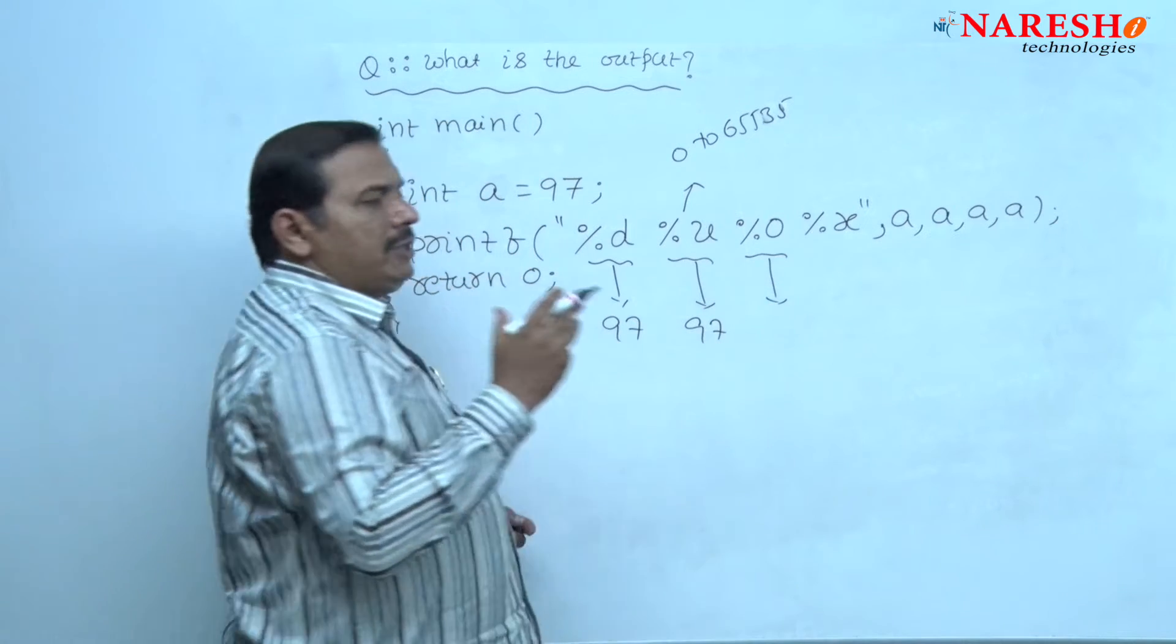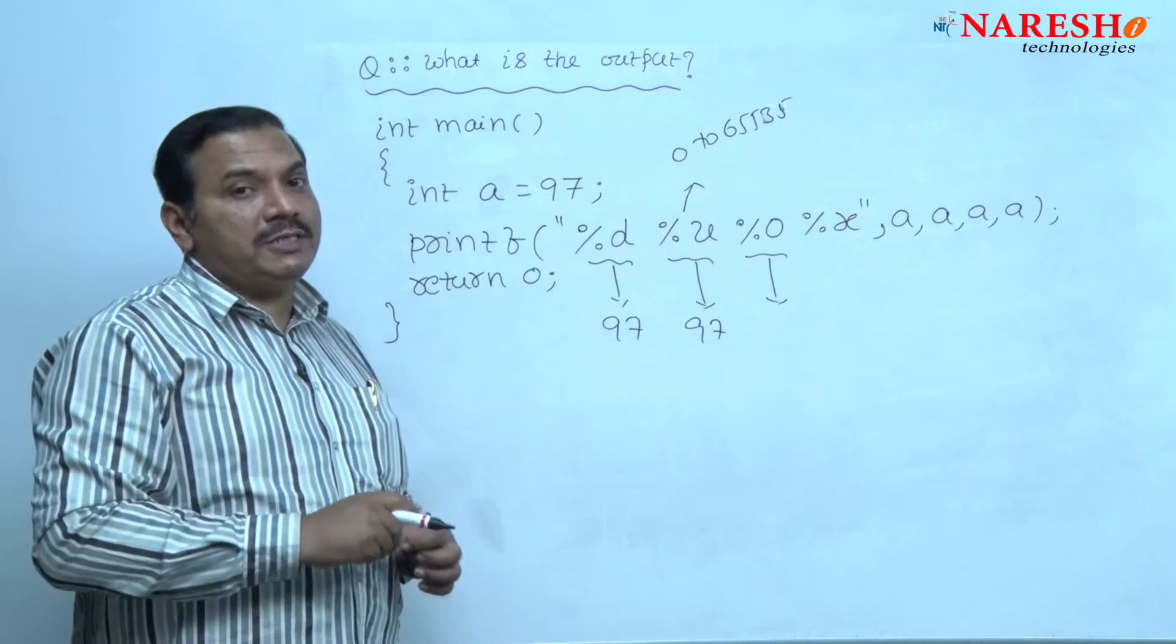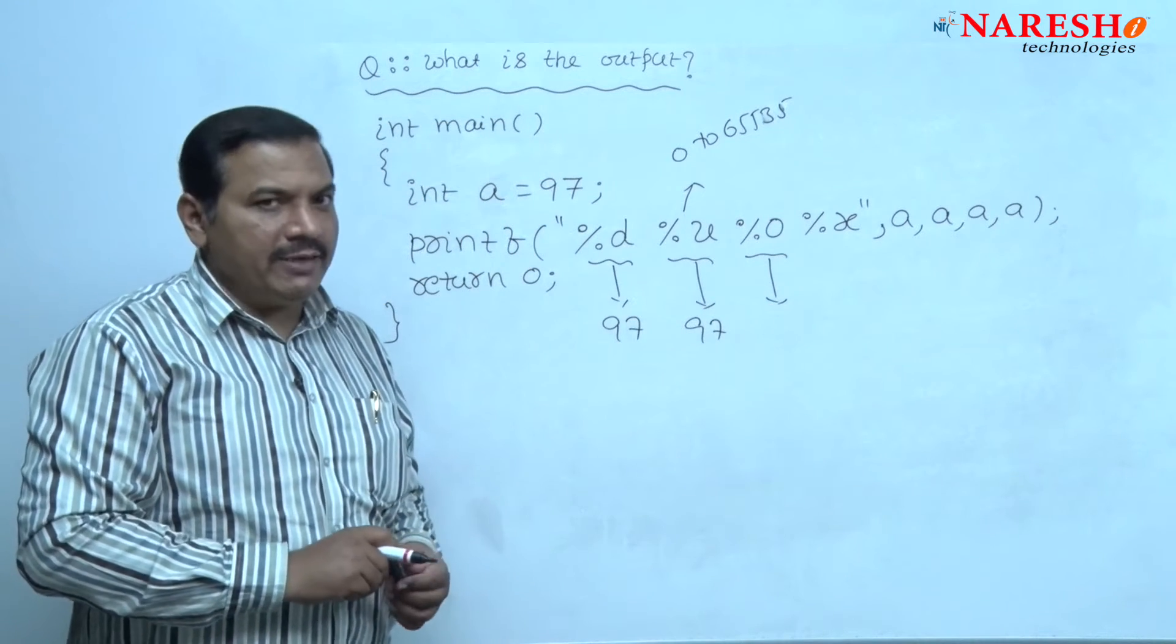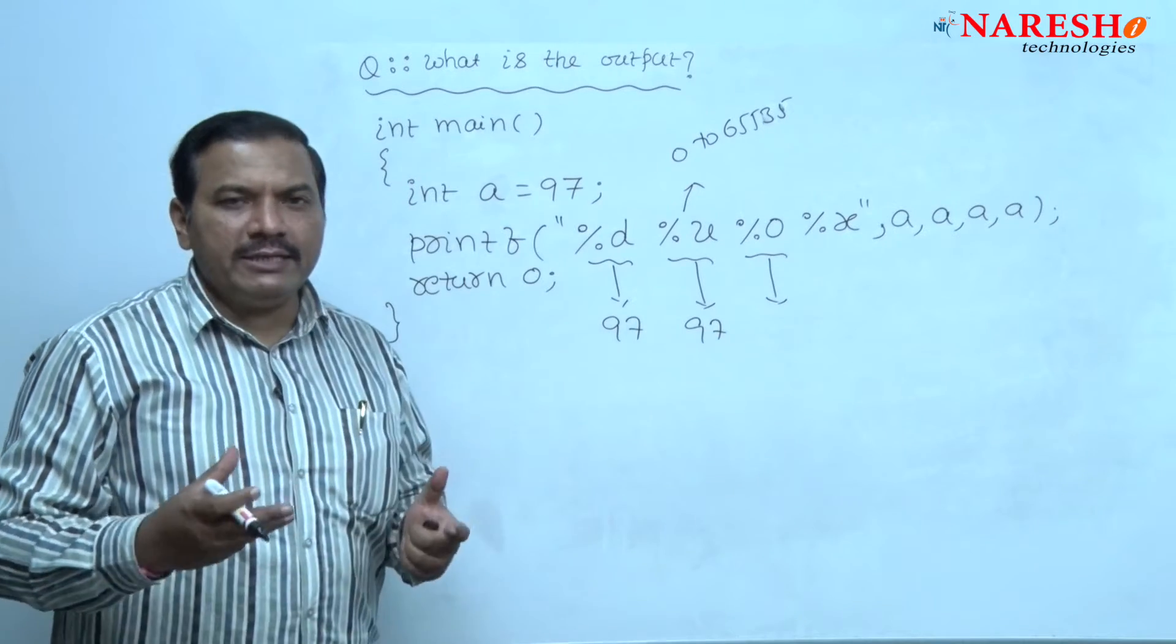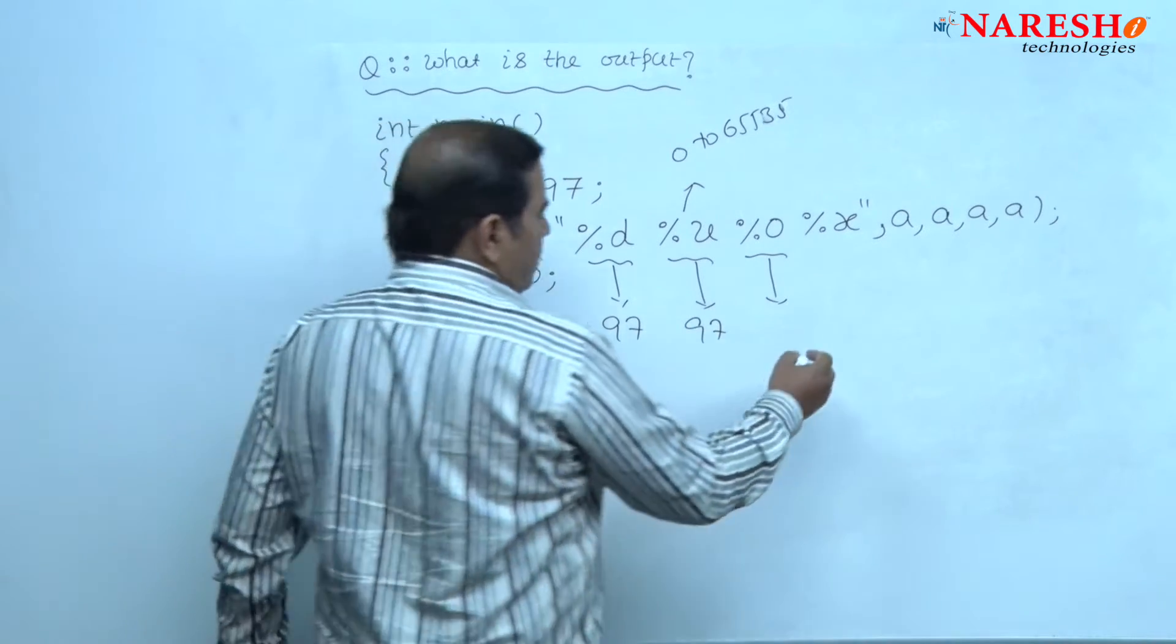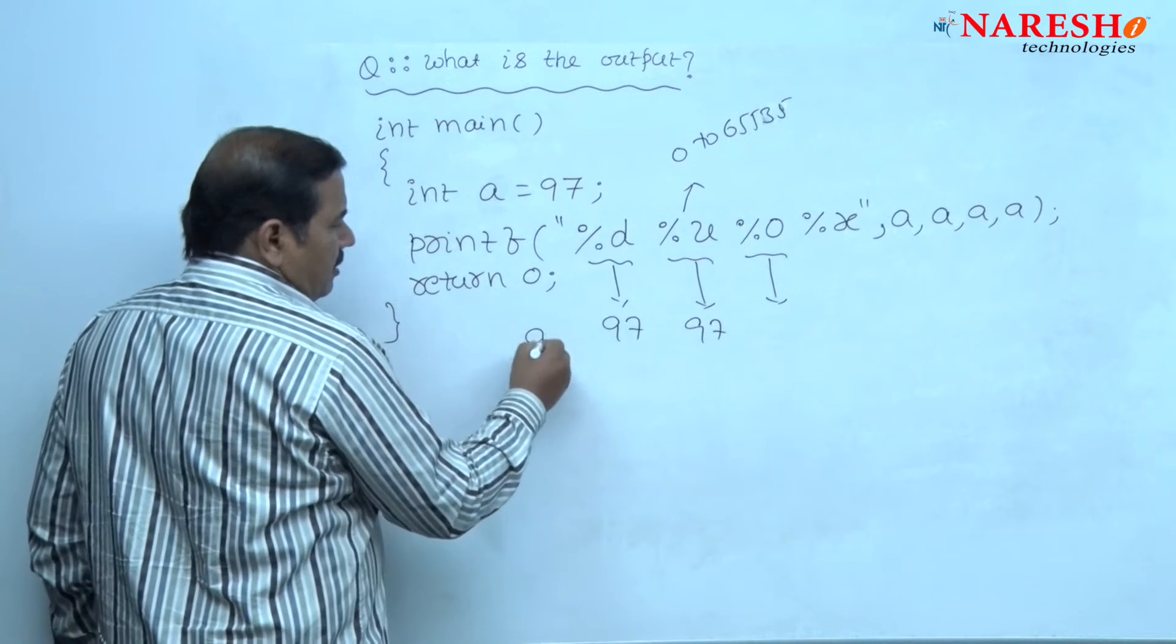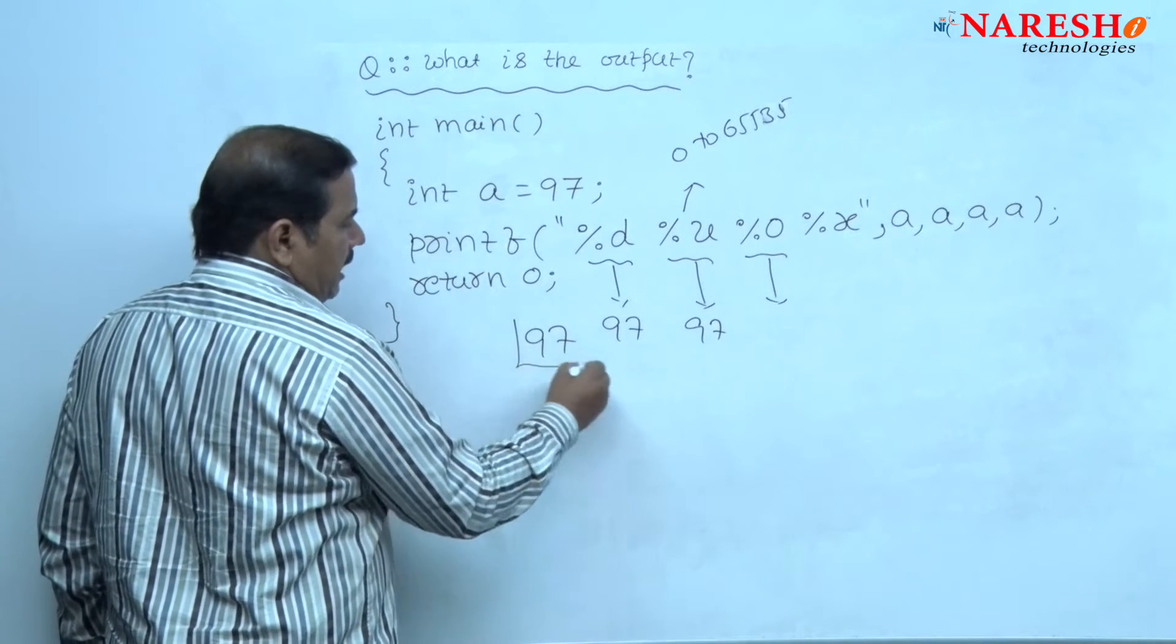For %o, the equivalent octal integer for this decimal value 97 is printed. How to convert the decimal value 97 into octal? Divide 97 with 8.